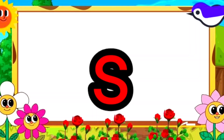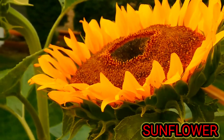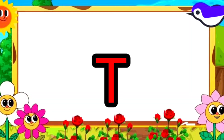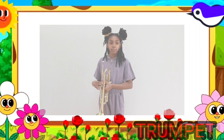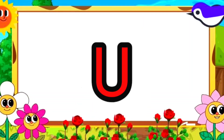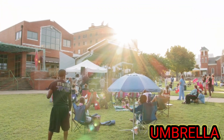S. S for sunflower. T. T for trumpet. U. U for umbrella.